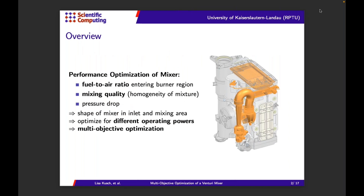You can see the system on the right-hand side. We are specifically interested in the Venturi mixer, where methane and air are mixed before they enter the burner region. We want to optimize the performance of this mixer by optimizing its shape. We are interested in different performance measures: first, meeting a target fuel-to-air ratio before entering the burner region; second, improving mixing quality in terms of homogeneity; and at the same time, constraining the pressure drop in the system.